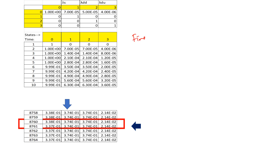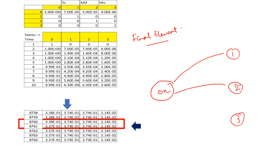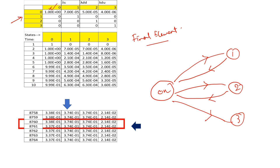Similarly we can get the PFD average value for the final element using the same approach. One aspect missing here is repairability — normally repair is possible from the fail safe state and the fail dangerous detected state. For simplicity we have not included repair here; including it would add transitions back from states 1 and 2 to state 0, increasing the probability of the OK state. The current calculation is therefore more conservative.